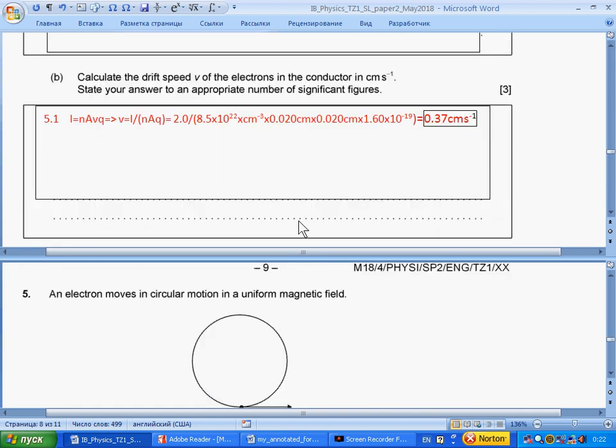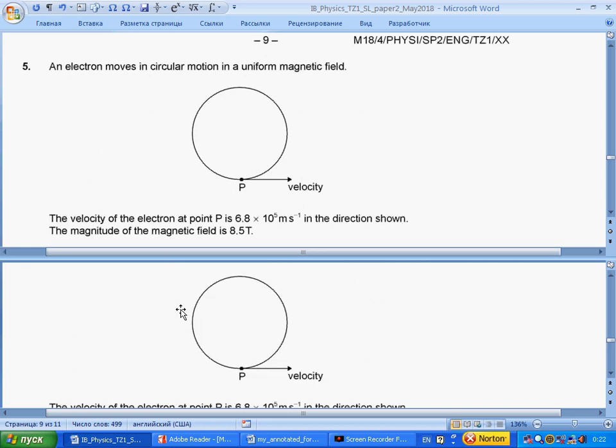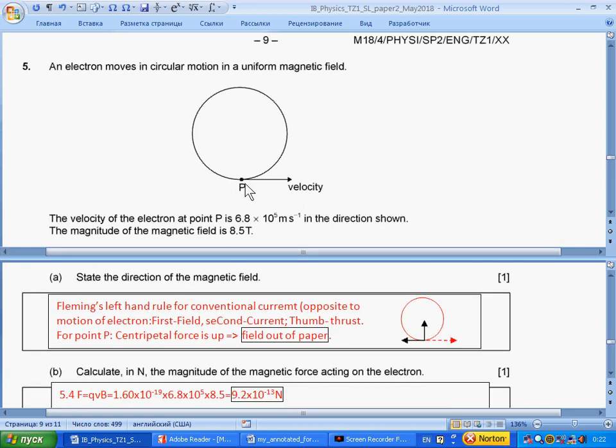Question 5. Electron moves in circular motion in a uniform magnetic field. The velocity is given. Magnetic field strength is given. State the direction of magnetic field. If electrons move to the right, then conventional current is to the left. We need it for Fleming's left hand rule. The thrust is towards the center, because resultant force should be towards the center. We have circular motion.